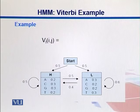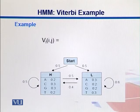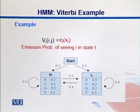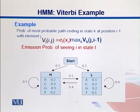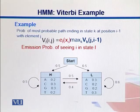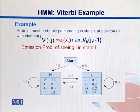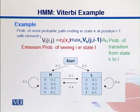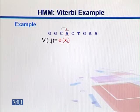In this example, I'm adding one more element to the equation. VL(i,j) equals EL(xi), the emission probability of seeing symbol i in state L, times max over K of VK(j, i-1), which is the probability of the most probable path ending in state K at position i-1 with element j. This is then multiplied with AKL, the transition probability from state K to L.